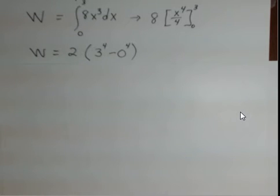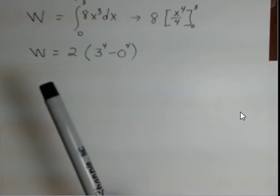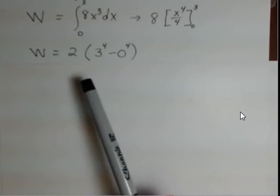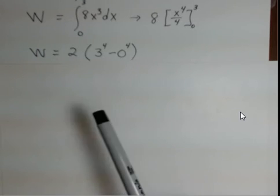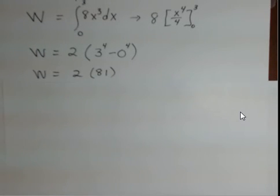We put in a 3, and I've factored out the 4. 8 divided by 4 gives a 2 out in front. Then the upper limit, 3 to the 4th. The lower limit, 0 to the 4th. If we put in 3 to the 4th, we get 81. Multiply that by 2, we get 162 joules. That's the amount of work done in this motion from 0 meters to 3 meters.